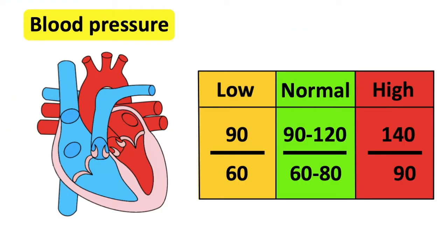Normal blood pressure is between 90 over 60 and 120 over 80. Anything lower than 90 over 60 is considered low blood pressure. Anything higher than 140 over 90 is considered high blood pressure.